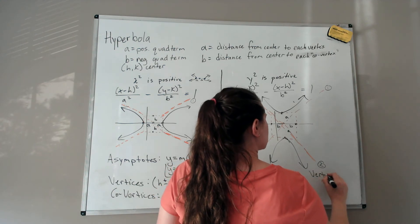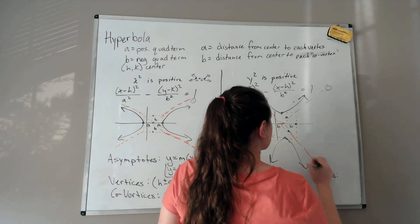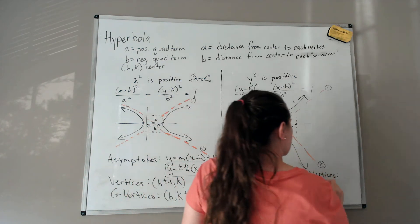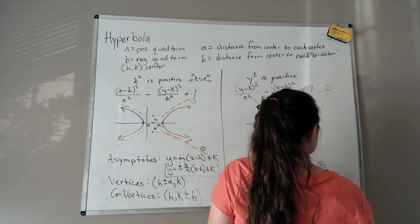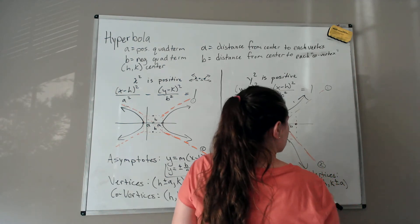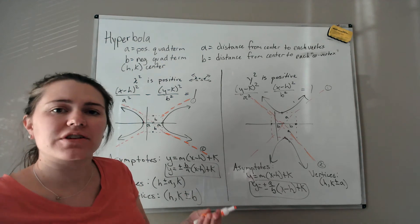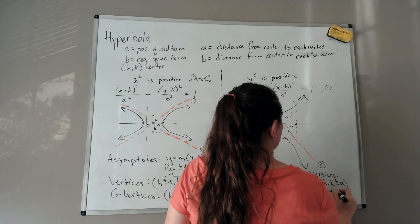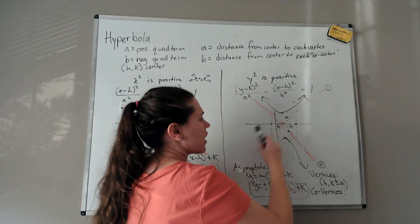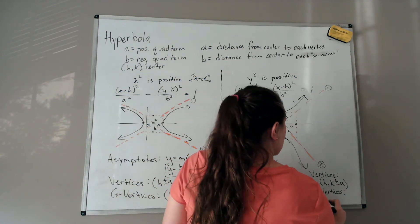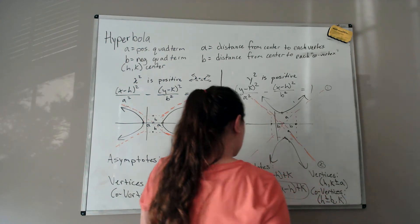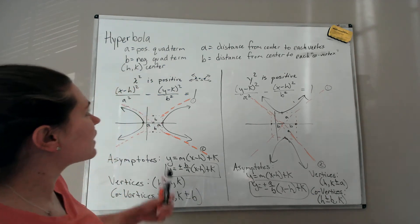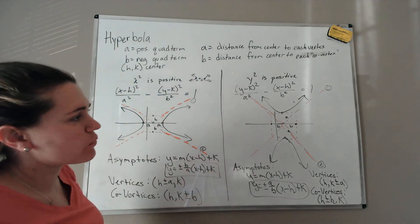The asymptote equations for the y-squared positive case are y equals plus or minus (a/b) times (x minus h) plus k — note it's a over b instead of b over a. The vertices are at h, k ± a, and the co-vertices are at h ± b, k. Co-vertices don't fall on the hyperbola.